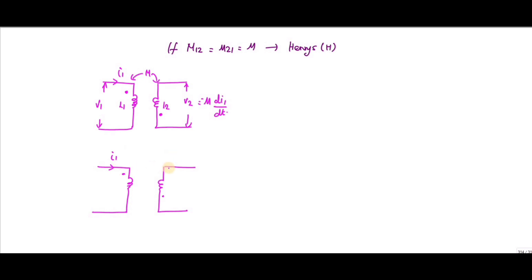If one current is entering this dot and another current is leaving this dot, you will get V1 equal to minus M·(dI2/dt). Here the current is leaving one terminal but entering the other, so V1 is equal to minus M·(dI2/dt).